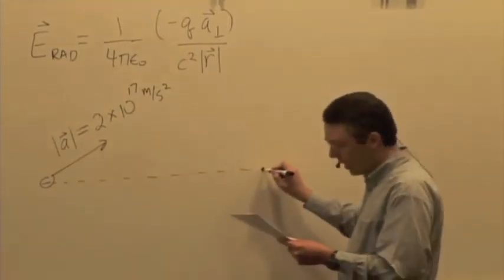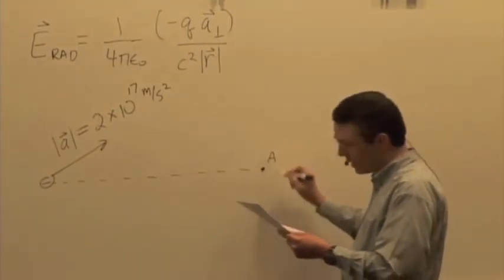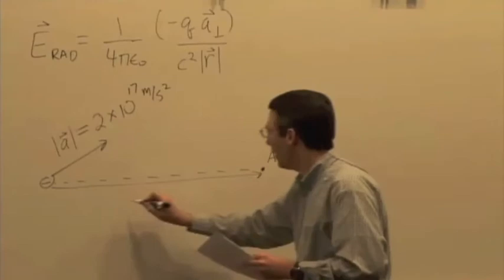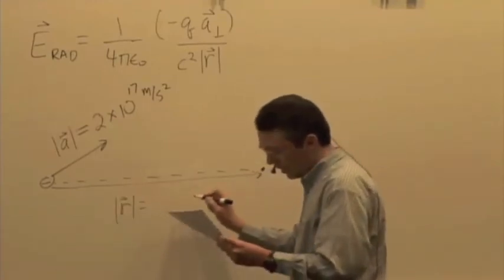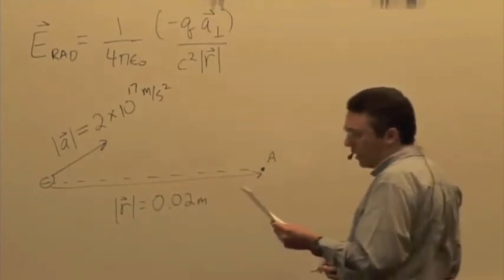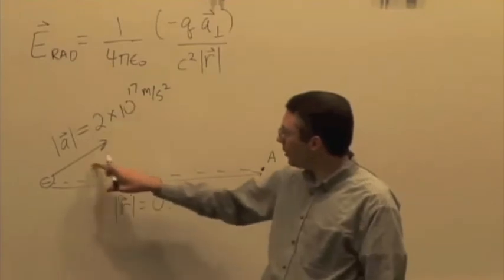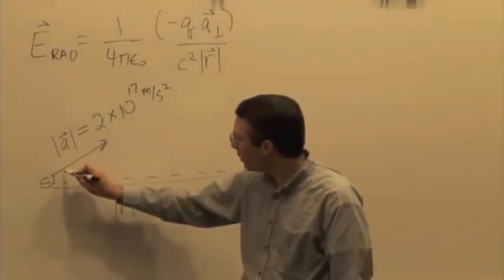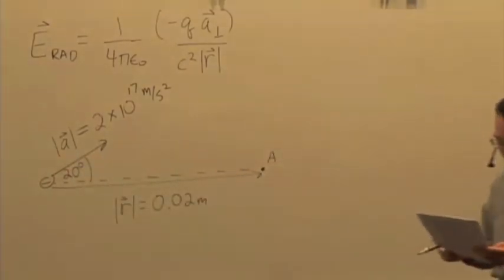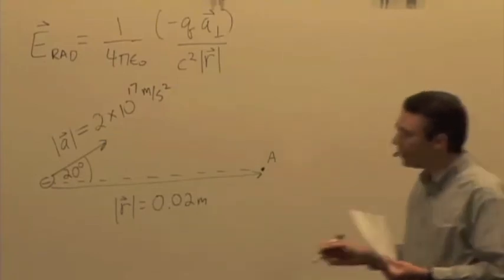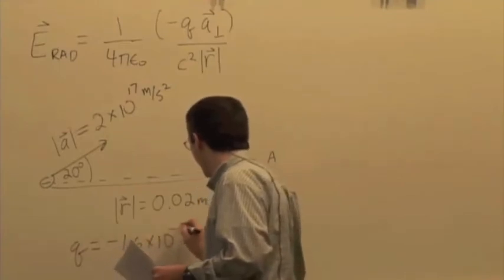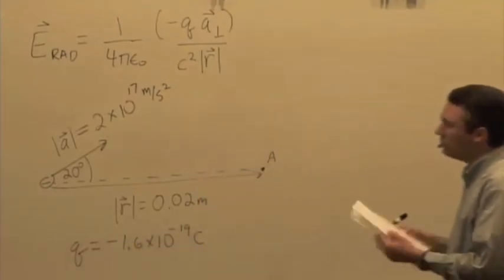R is over here, or the location is over here. So let's say the distance R, magnitude of R is 0.02 meters. And to find the perpendicular component of acceleration, we're going to need an angle here. And so let's say it's making a 20-degree angle with R. The acceleration makes a 20-degree angle with R. And this is an electron, so we know the charge: 1.6 times 10 to the minus 19.